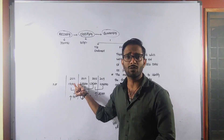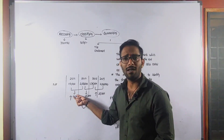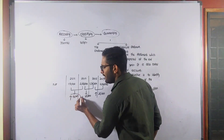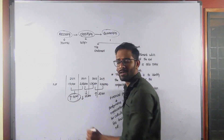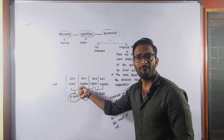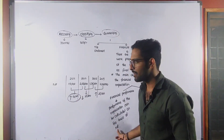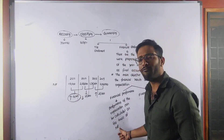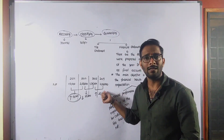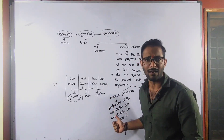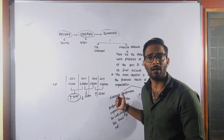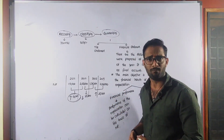Whenever sales increase, then automatically net profit also increases. When net profit increases or decreases compared to the previous year, we can assess the performance. Net profit increasing or decreasing — calculated this way, we can call it financial performance.